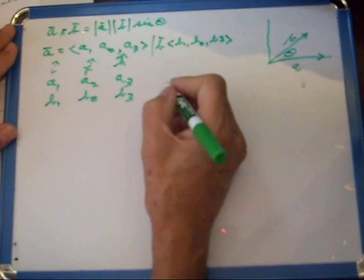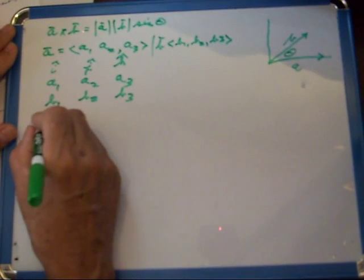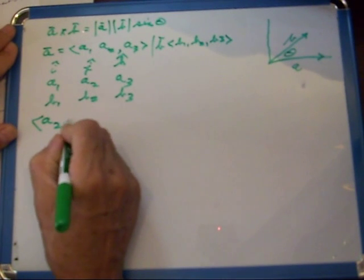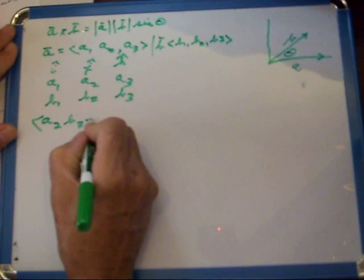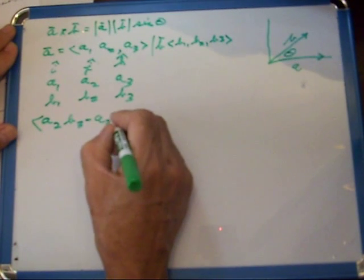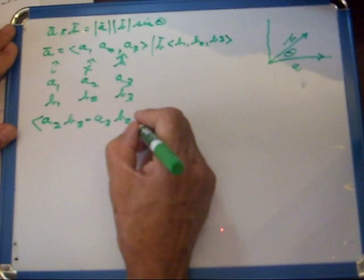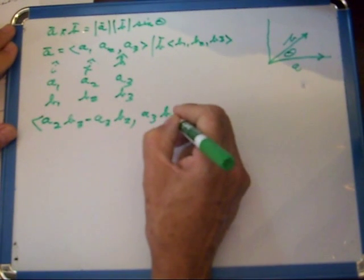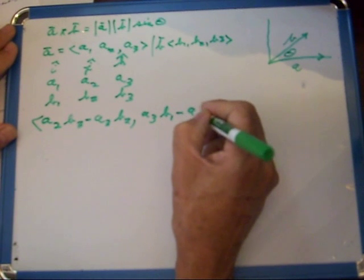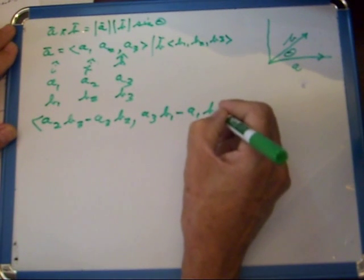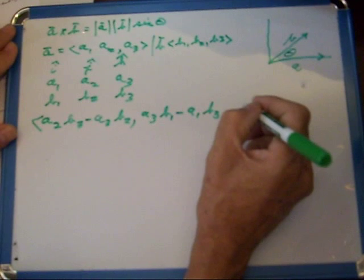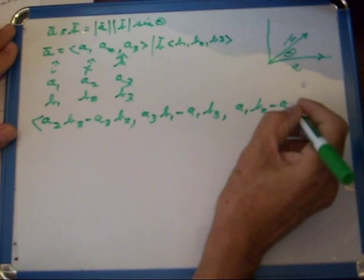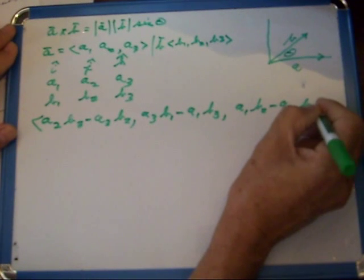And then you just take and you write the equation A2 times B3 minus A3 times B2, and the next coordinate is A3 times B1 minus A1 times B3, and the next coordinate is A1 times B2 minus A2 times B1.